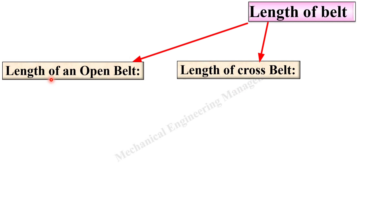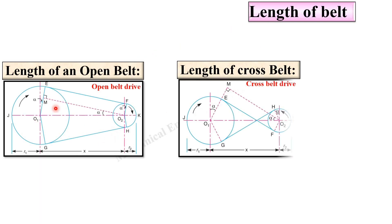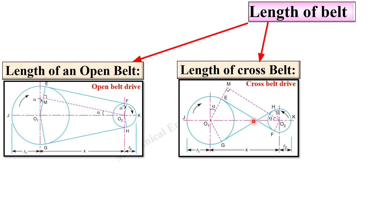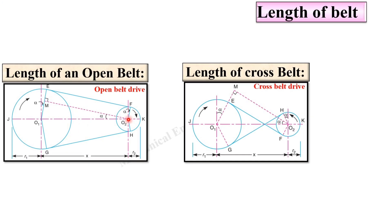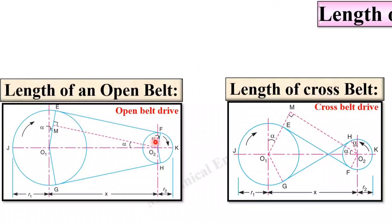Generally there are two cases: one is the length of open belt drive and the second one is the length of cross belt drive. This is the open belt drive arrangement and this is the cross belt drive arrangement. In both cases the length of the belt will be different. The length of open belt drive will always be less than the length of cross belt drive.